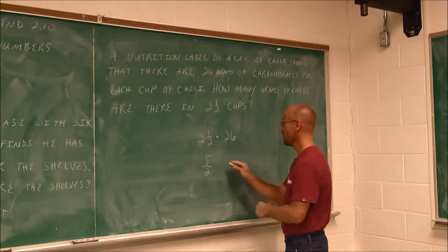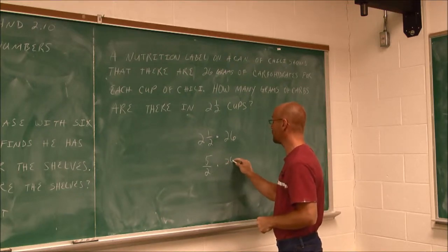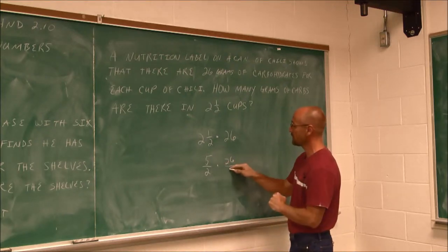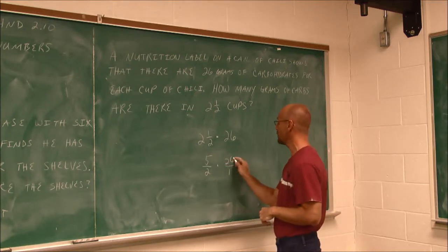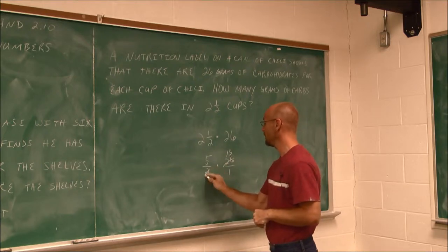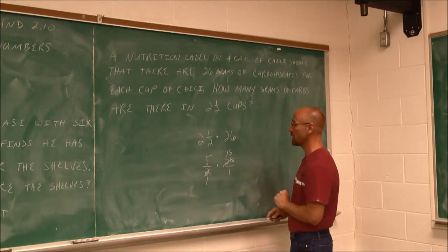So 2 and 1/2 is 5/2. I'm going to multiply that by 26. And I can think of this 26 as being over 1. 2 and 26 have that common factor. So I'm going to reduce it here. This becomes 13. That becomes 1. We just factor out that 2.